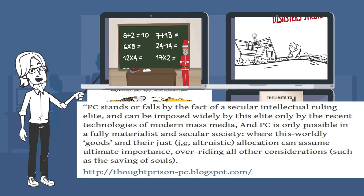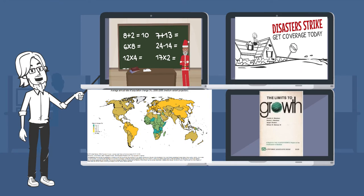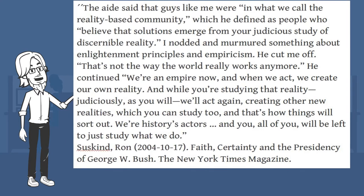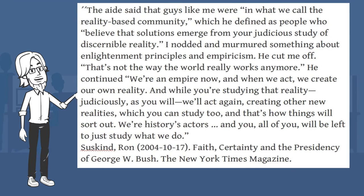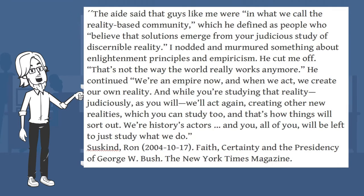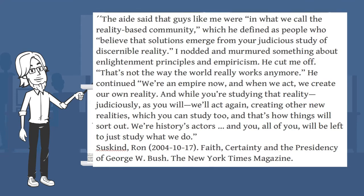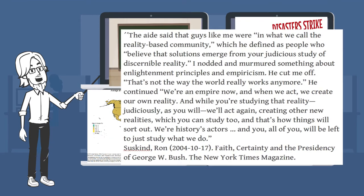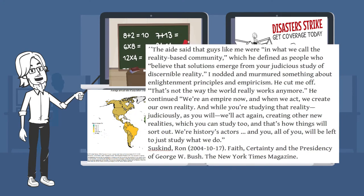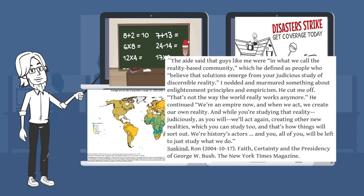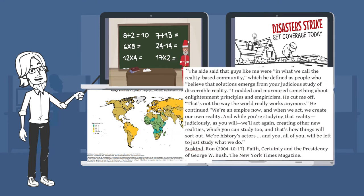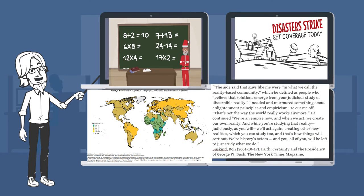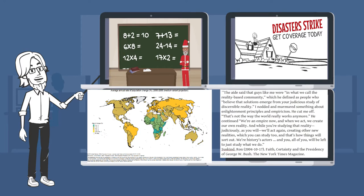The scientific academy has succumbed to the Rovian actors in history syndrome as described by Ron Susskind. The aide said that guys like me were in what we call the reality-based community, which he defined as people who believe that solutions emerge from your judicious study of discernible reality. I nodded and murmured something about enlightenment principles and empiricism. He cut me off. That's not the way the world really works anymore. He continued: We're an empire now, and when we act, we create our own reality. And while you're studying that reality judiciously, as you will, we'll act again, creating other new realities, which you can study too, and that's how things will sort out. We're history's actors, and you, all of you, will be left to just study what we do.